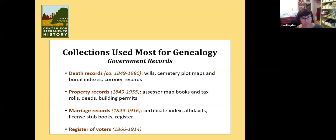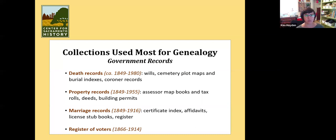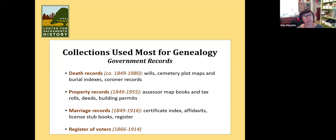Death records: we've got lots of death records dating back to 1849 and up to around 1980. This includes wills that were filed with Sacramento County, coroner's records from 1849 to the 1970s, cemetery plot maps and burial indexes. We also have funeral home records and other cemetery records. If you can't find where the person is buried, we have those funeral home records, which often say where the person is buried. Same with the coroner's records — those are a really good place to look for what happens after the person dies. I've helped someone from the East Coast who wasn't sure where their dad was buried, and I was able to find that information just looking at the coroner record. A lot of these records help point you to other places you may not have thought to look.